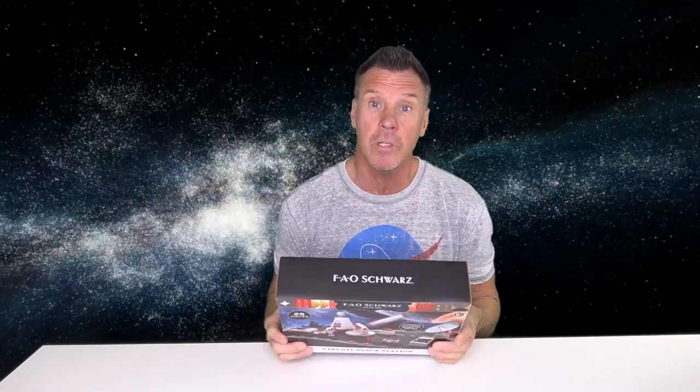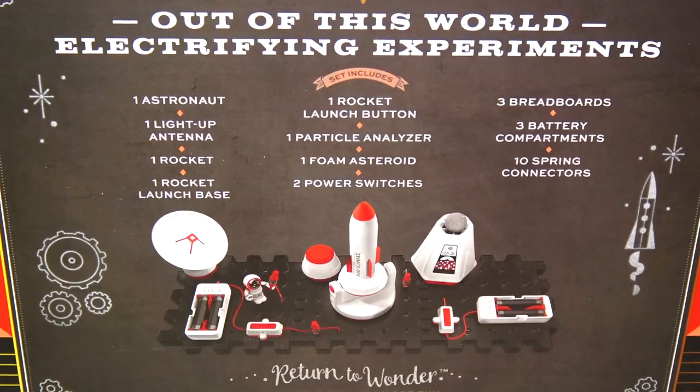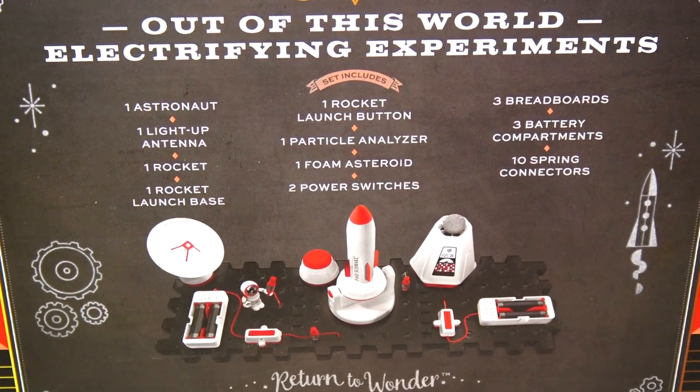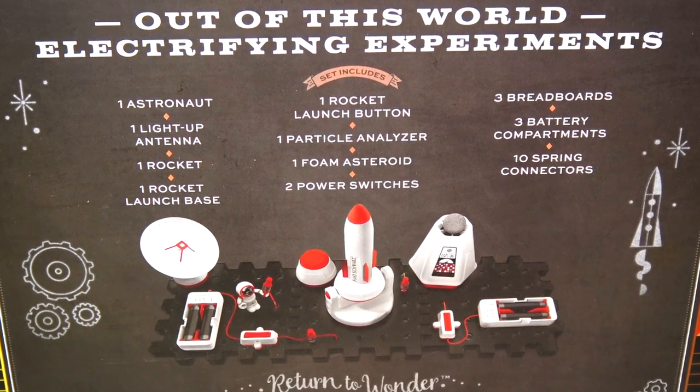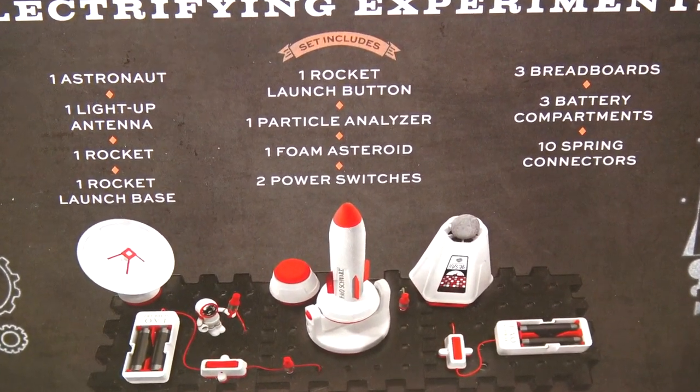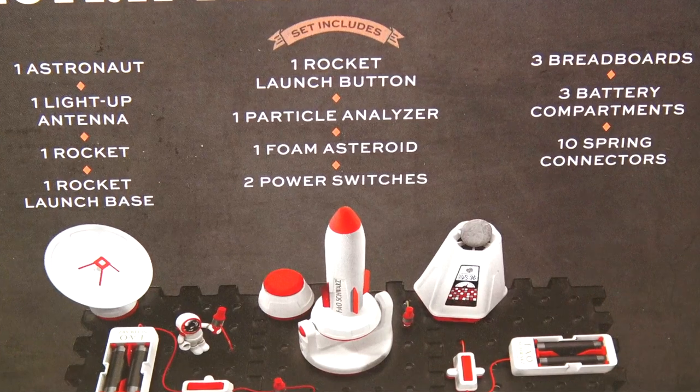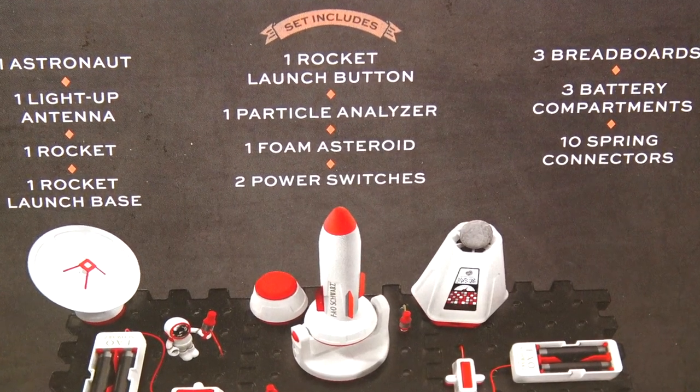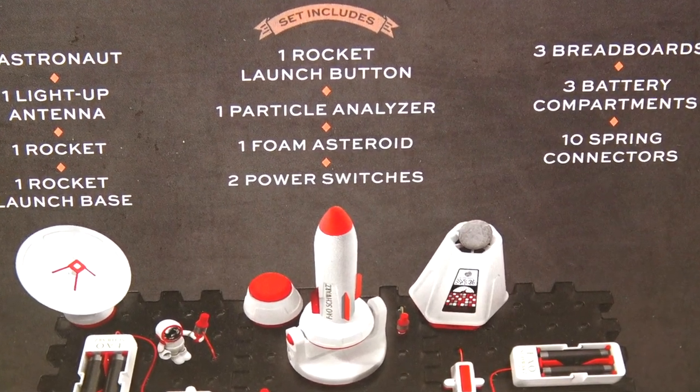On the back it says it includes one astronaut, one light up antenna, one rocket, one rocket launch base, one rocket launch button, one particle analyzer, one foam asteroid, two power switches, three bread boards, three battery compartments, and ten spring connectors. Whoa, there's a lot of stuff to unbox here. So why don't we take this to the other table and start the Galactic Experiment Kit.